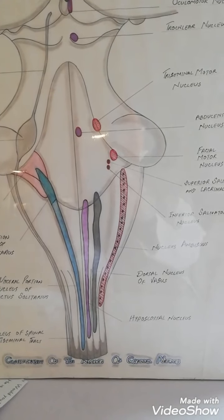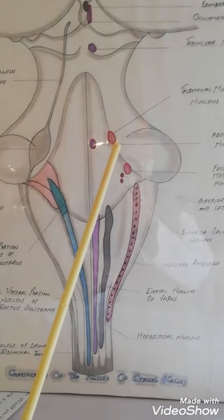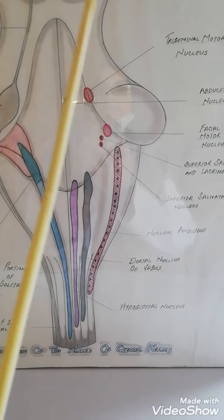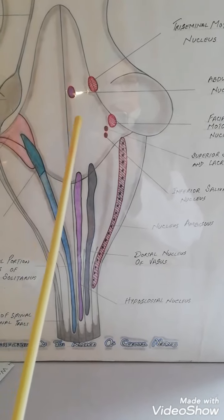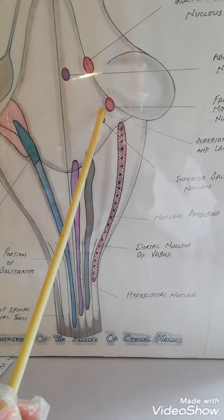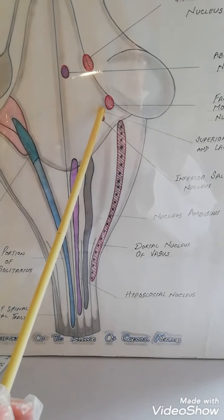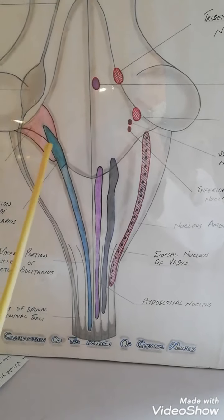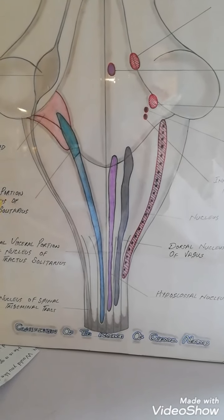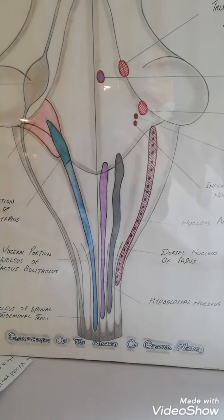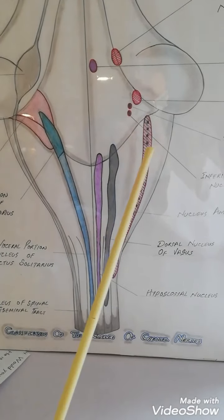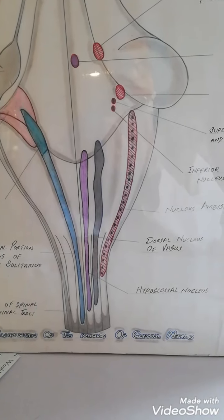Now the facial nerve — a mixed nerve — has the facial motor nucleus, the lacrimal nucleus, and the superior salivatory nucleus. On the sensory side is the nucleus of the tractus solitarius (gustatory portion), which also forms part of the facial nerve's nuclei. All of these are located at the level of the lower pons.